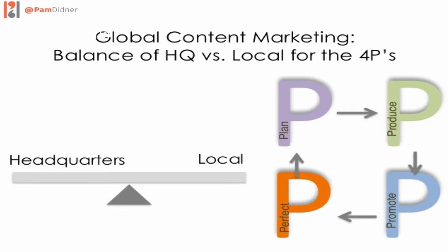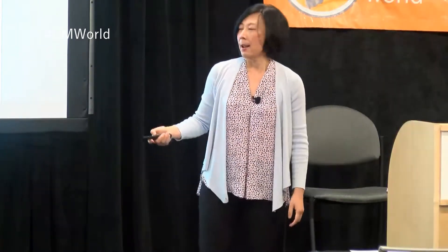Now we have the definition out of the way. How to put a global team together — I can summarize in these two visuals. It's really the balance of the headquarter and local team with the four P's, to accomplish your content marketing efforts. What I want to talk about is how to do that in the next 40 minutes.